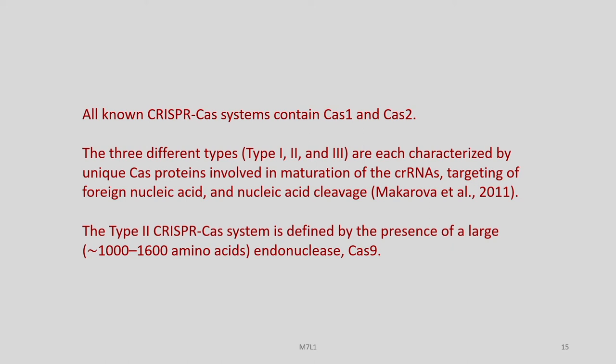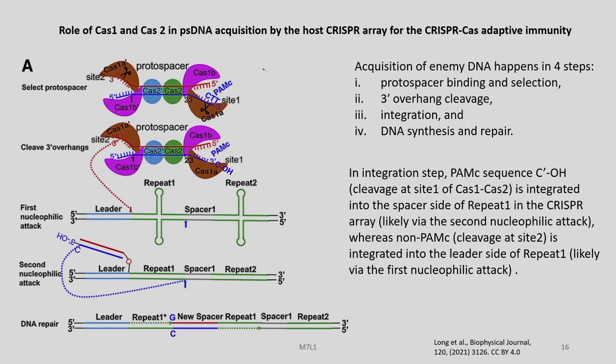The type 2 CRISPR-Cas system is defined by the presence of a large 1000 to 1600 amino acid endonuclease called Cas9. Let us look into the role of Cas1 and Cas2 in protospacer DNA acquisition by the host CRISPR-Cas array for CRISPR-Cas adaptive immunity. Acquisition of the enemy — that is, viral — DNA happens in four steps: the first step is protospacer binding and selection; the second step is 3-prime overhang cleavage; the third is integration; and the fourth is DNA synthesis and repair.